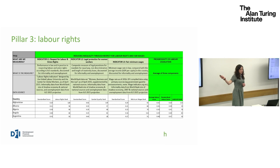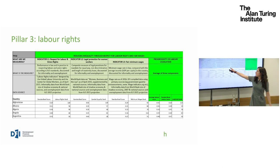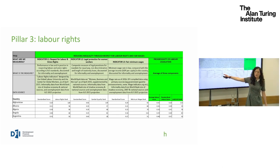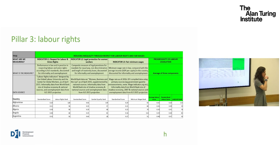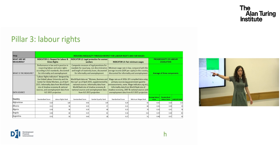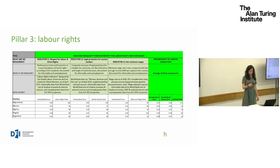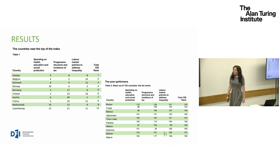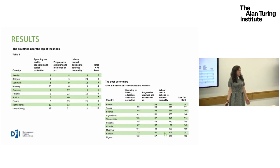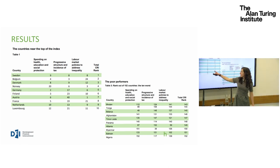Our third pillar covers labour union rights, legal protections for women workers, and minimum wages — all averaged with equal weighting to produce the labour pillar score. At the end of the day, we end up with our Commitment to Reducing Inequality Index — a straightforward equal-weighted average of the three pillars on spending, tax and labour markets.